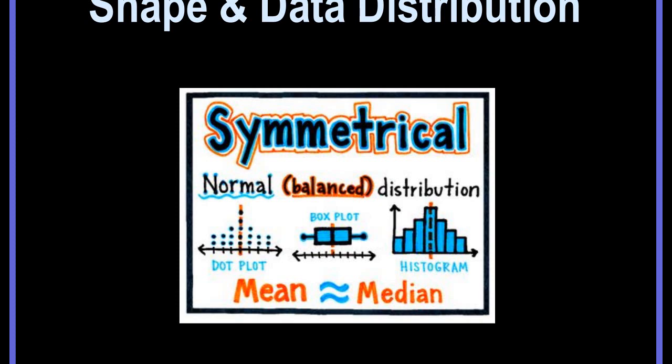We've talked about the measures of central tendency, the mean, the median, the mode. We also talked about range. Now we're going to talk about looking at graphs. What does the shape or the distribution of the data tell us?